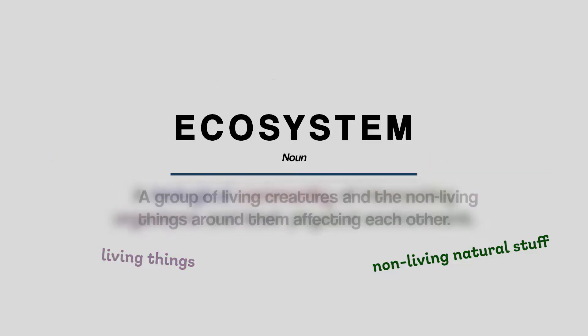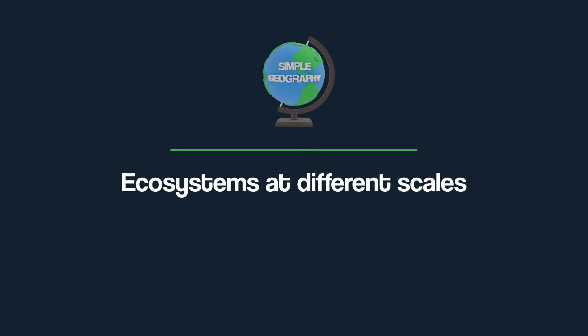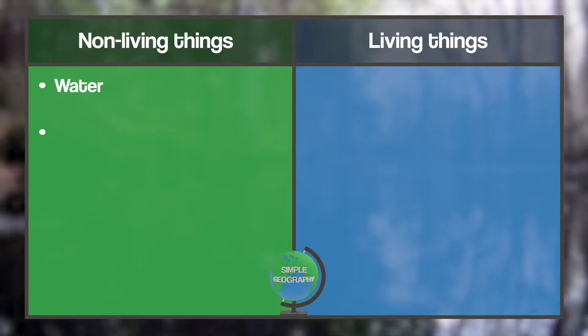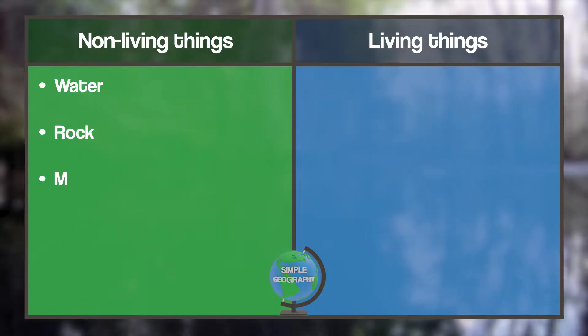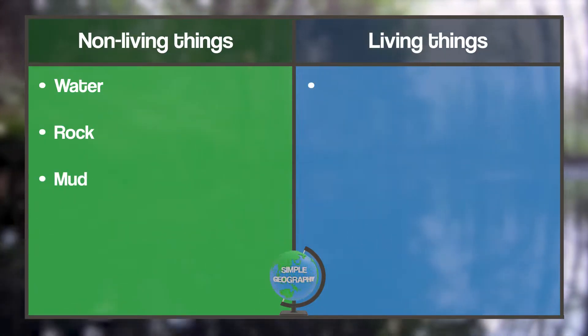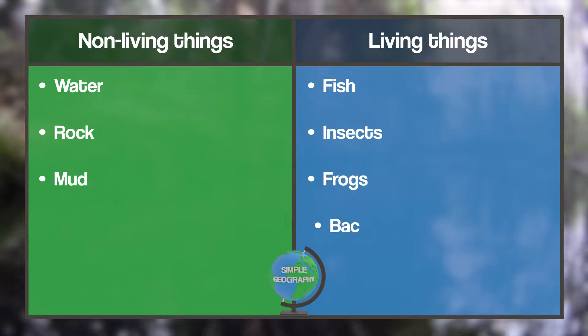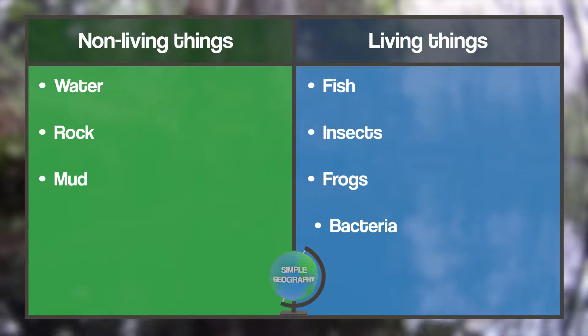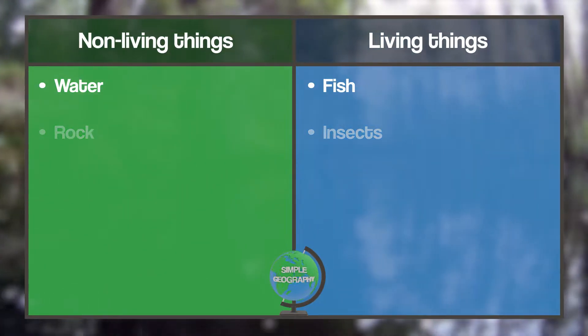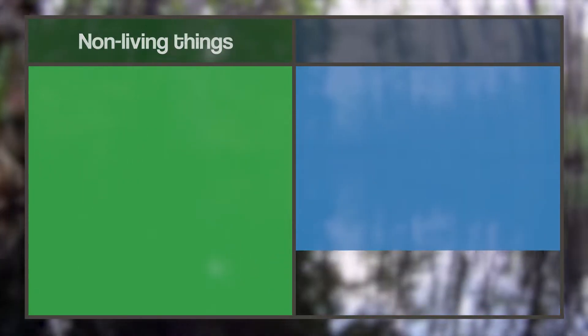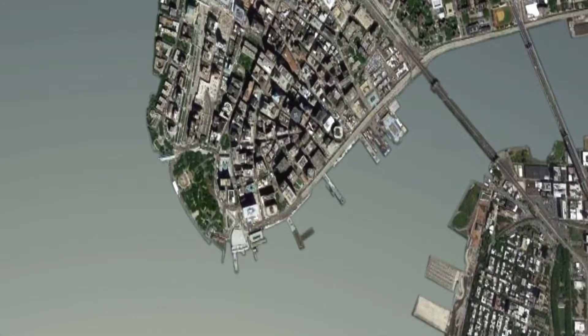Ecosystems come in all sizes. Take a pond for example — a pond is made of non-living things like the water, rock, and mud underneath it, but there are also living things in there like fish, insects, frogs, and even bacteria. All of those things interact with each other in some way, so it fits the definition of an ecosystem perfectly. But let's think bigger.